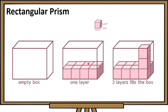Nung nilagyan natin ng cubes itong ating rectangular prism, meron tayong one layer. Ang one layer na ito, ang laman na cubes ay 1, 2, 3, 4 — and apat sa likod — a total of 8 cubes. Ilang layer ang kailangan para mapuno ang ating rectangular prism? We need 3 layers of 8 cubes each para mapuno itong ating box.